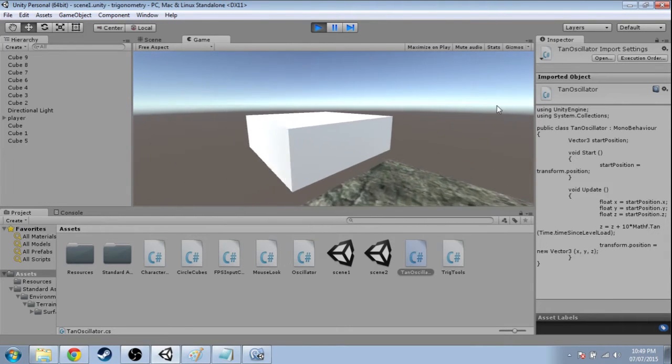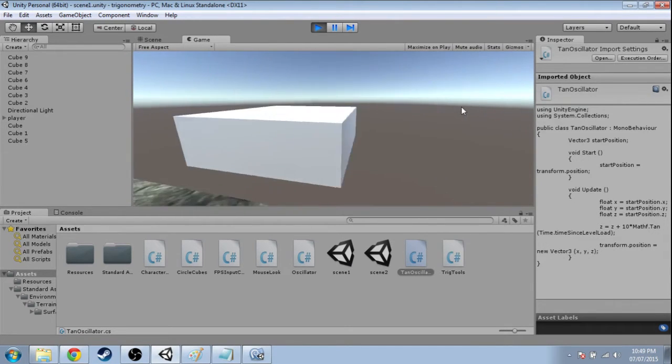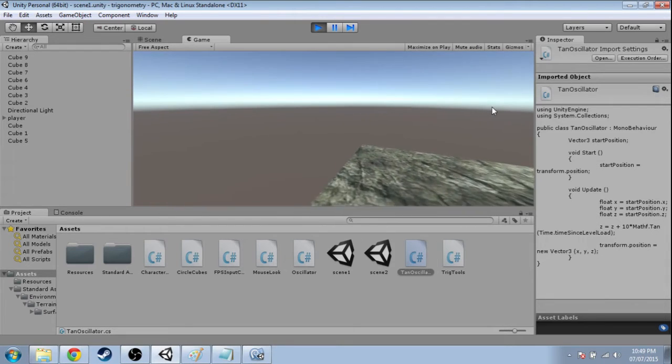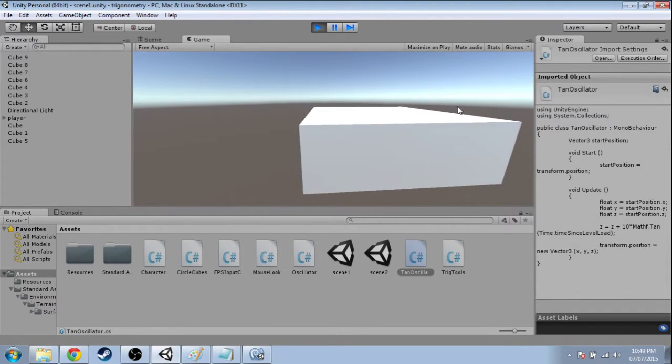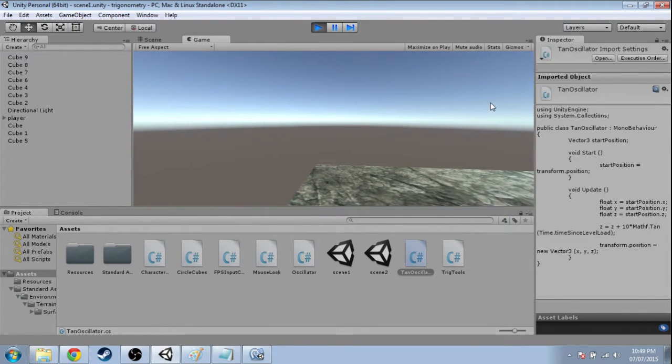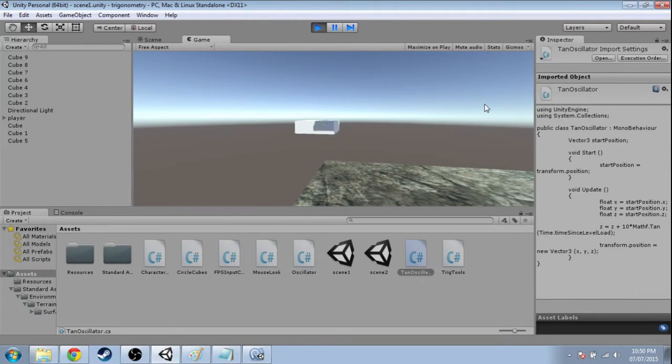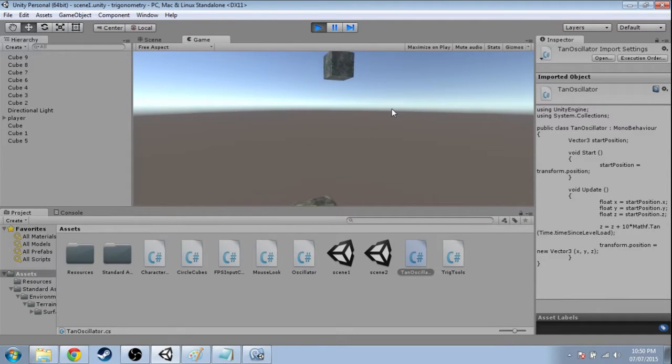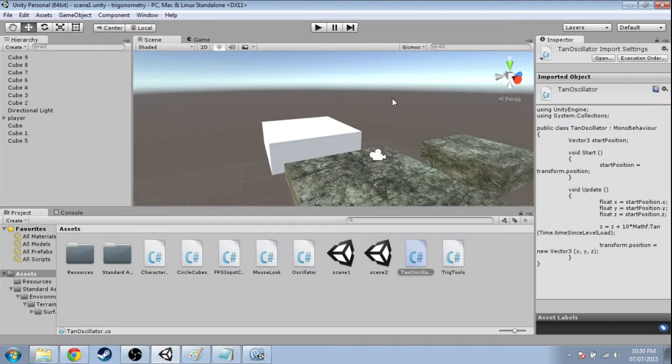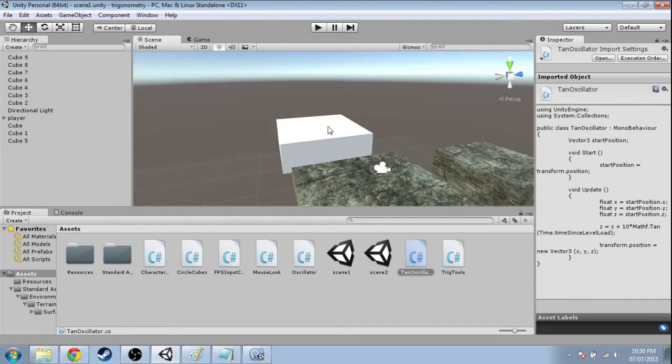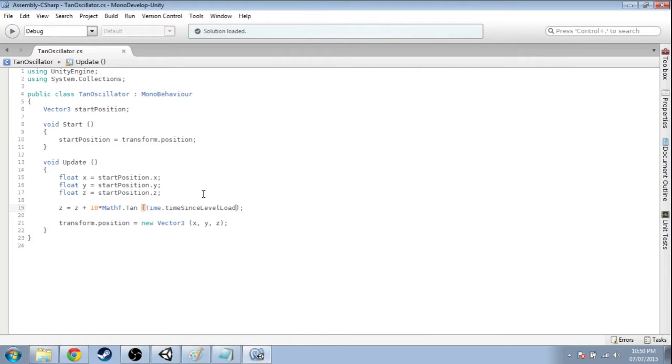In the last video we used the tan function to make this platform move around. It's slow in the middle, then it zips off to infinity and actually comes from negative infinity over here. Let's have a look at the tan oscillator script and see what other interesting ways we can make a platform move.